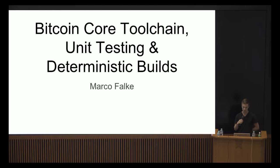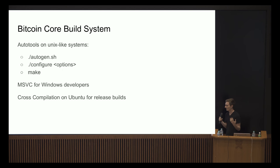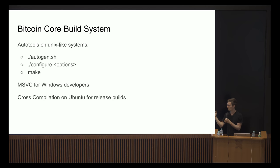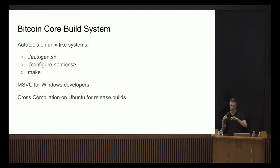The build system is based on autotools, so it should just work anywhere autotools runs — you just type in configure with maybe some options and then make. Very recently we added support for MSVC builds, mostly for Windows developers to do native builds and not have to switch between Linux and Windows all the time.